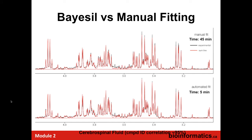Here's an example of cerebrospinal fluid done by a manual method. The red is the fitted spectrum done using Chenomx, and the black is the actual spectrum. Below that is one being fit with Bayesil. The red basically matches the black, and the difference is one took 45 minutes while the other took between 3 and 5 minutes.